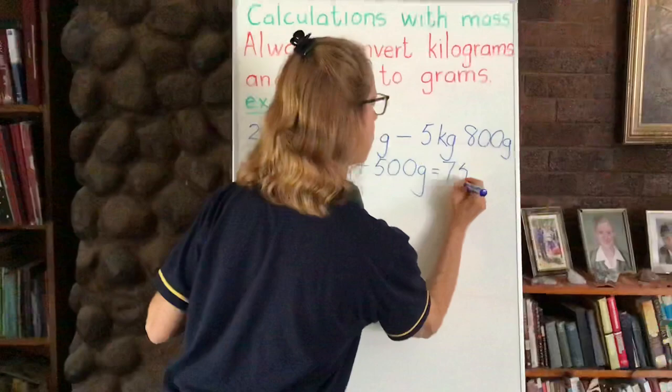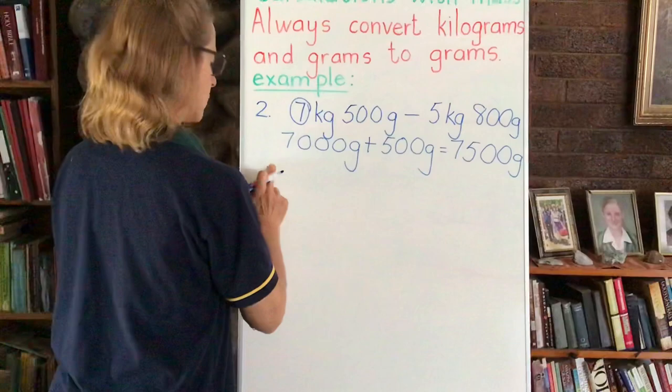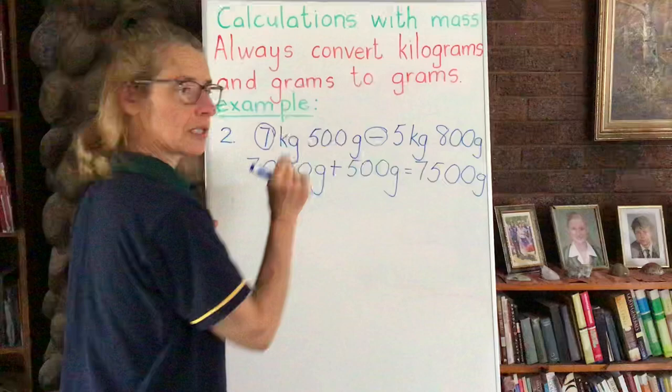And now we go to the second part over here. We're going to add on - no, we're not adding on, sorry, we're minusing this time. We're going to be doing minus. So we've got 5 kilograms here, and remember to convert kilograms to grams we have to multiply the kilogram by 1000.